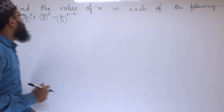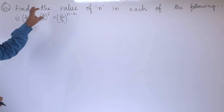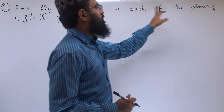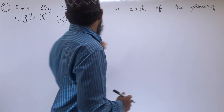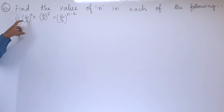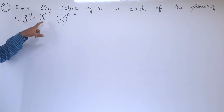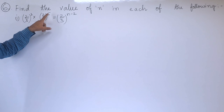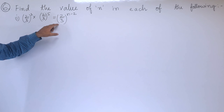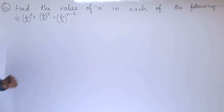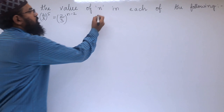Sixth problem: find the value of n in each of the following. The first part is (2/3)³ × (2/3)⁵ = (2/3)^(n-2). We need to find out the value of n.